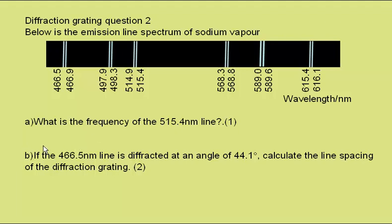Well, we're given on the datasheet that wave speed equals frequency times wavelength. So if we rearrange the equation to give frequency is wave speed divided by wavelength. Wave speed of all the electromagnetic spectrum as given on the datasheet is 3